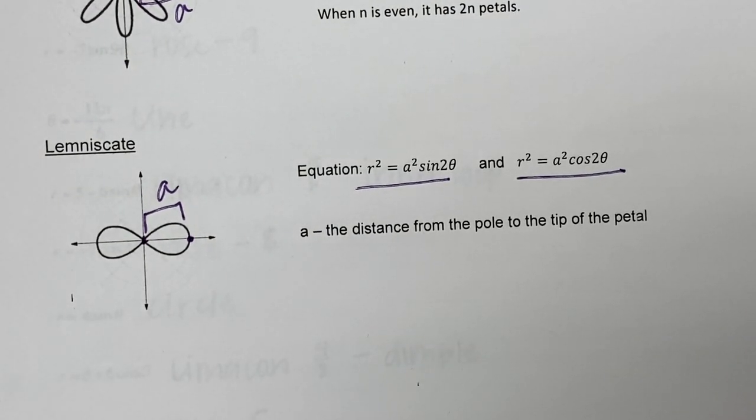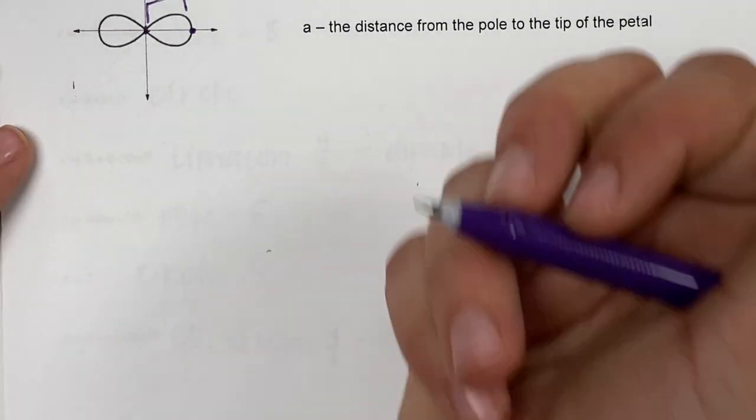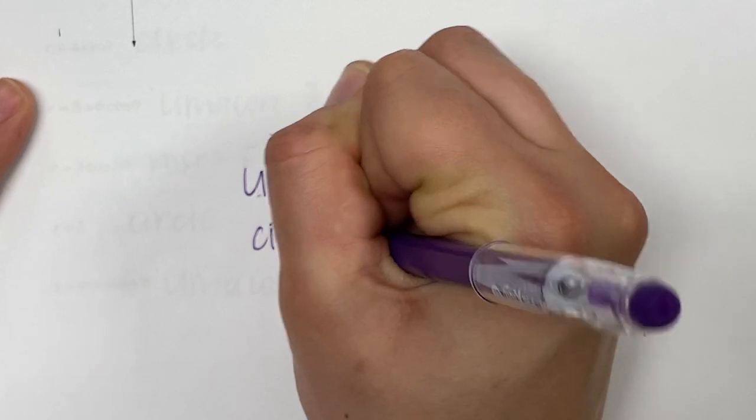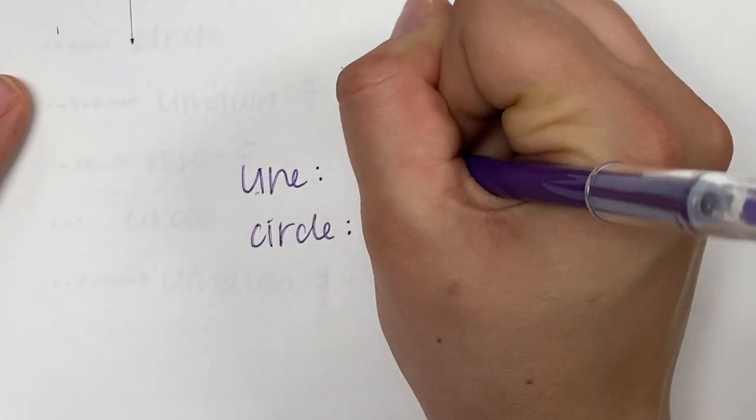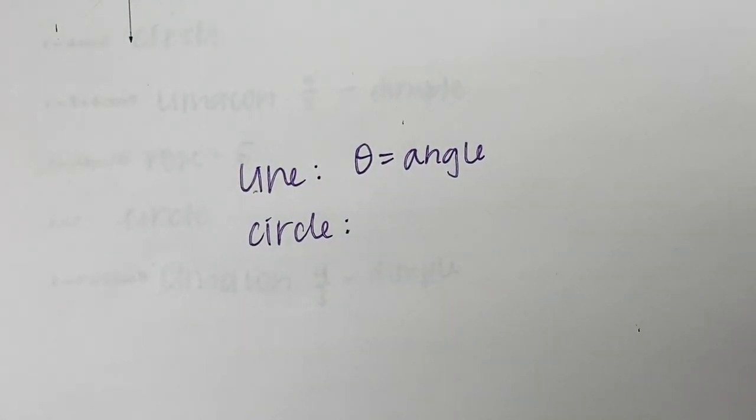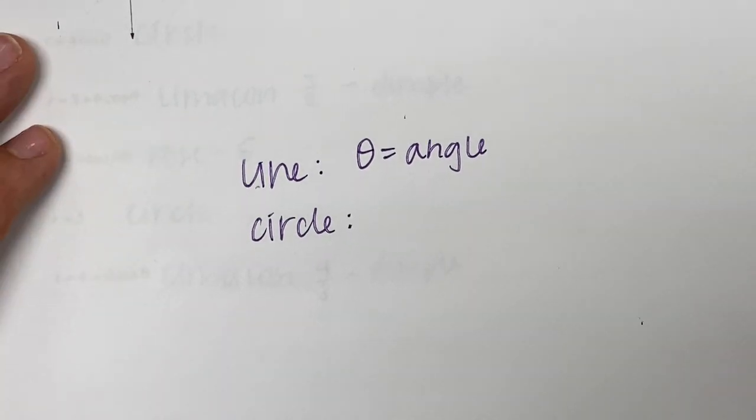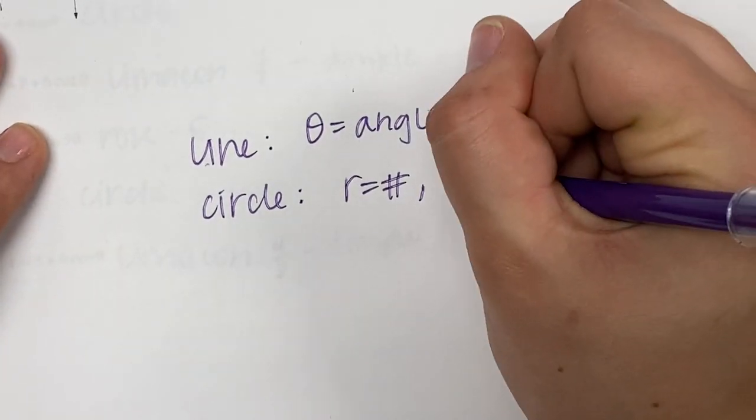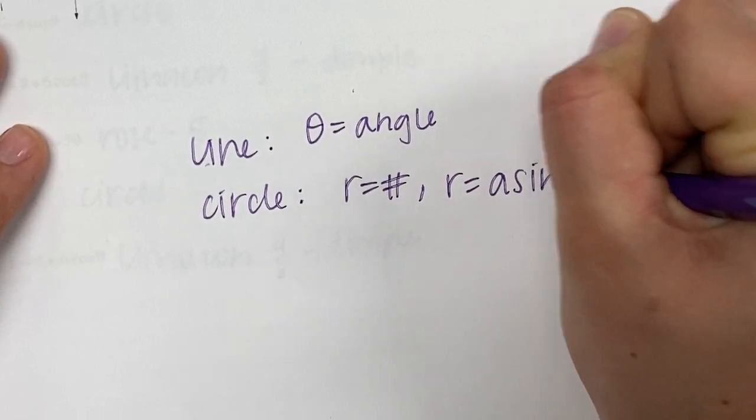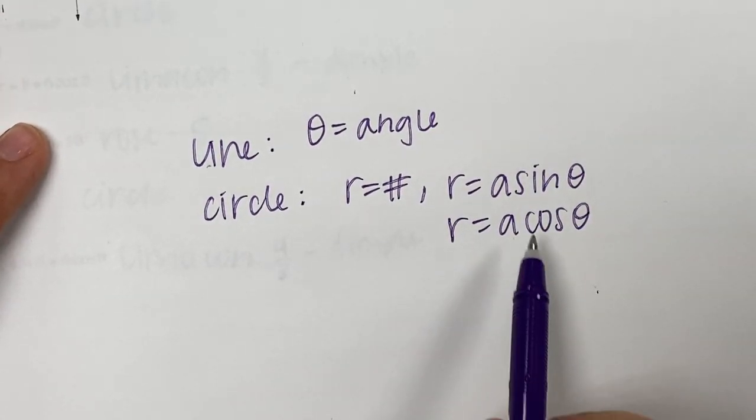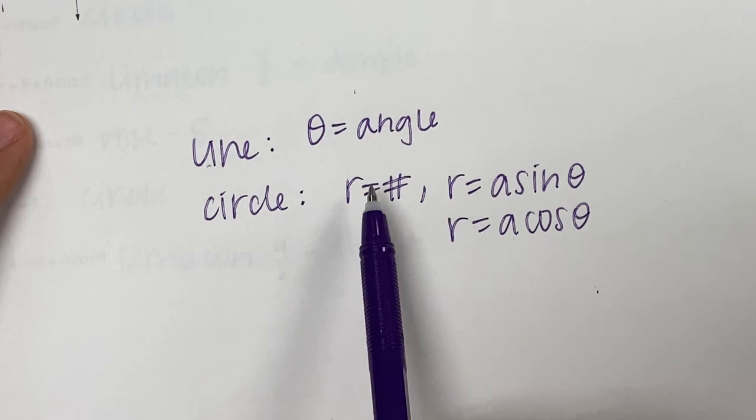Those are the four weird ones. There are two more you'll want to identify on page 13 when you go to practice: line and circle. You get a line when you have theta equals some angle, like theta equals 30 degrees or theta equals π/6. You get a circle if you have r equals a number, like r = 3, or r equals a number times sine theta or cosine theta. These two will also be present on the next page.